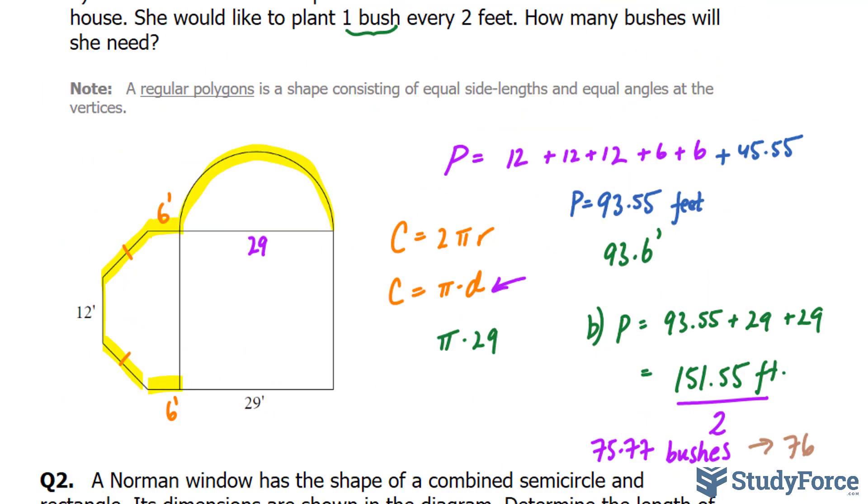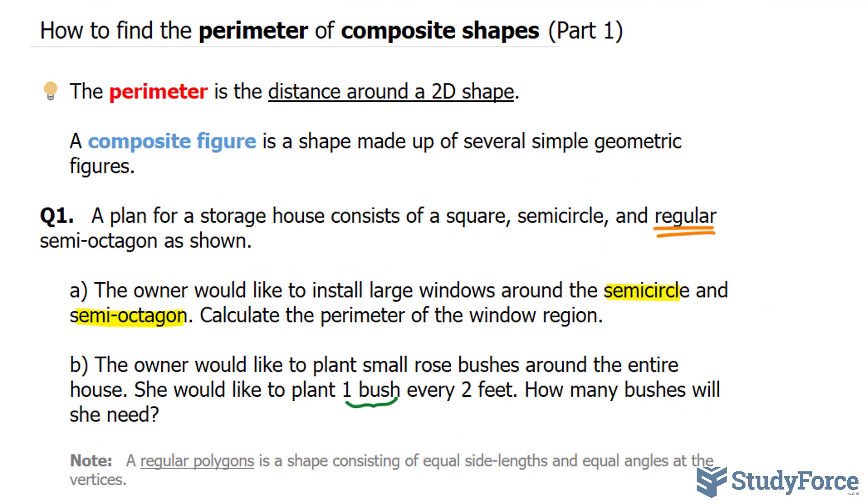And there you have it. Two examples on how to find the perimeter of composite shapes. If you would like two more examples, make sure you watch part two of this series. We'll see you soon.